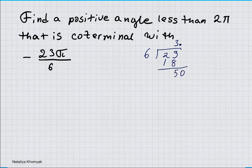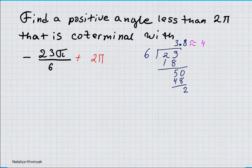6 will go into 50 eight times, and 8 times 6 gives us 48. What you should take away from this is that 3.8 rounds off to 4. So I will be adding 2π to get my positive value, but you will have to do it at least twice, so I'm going to multiply it by 2.